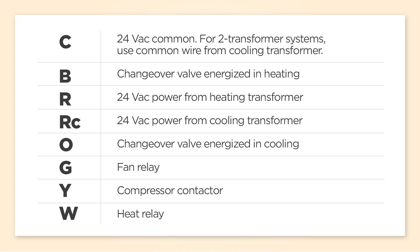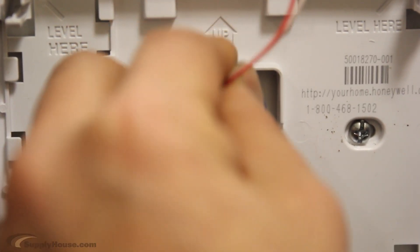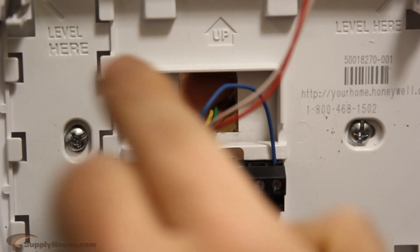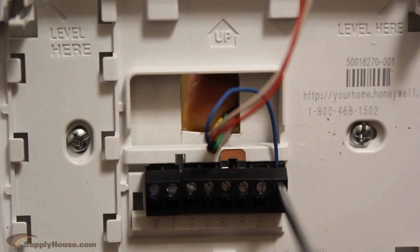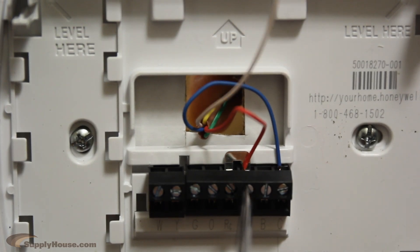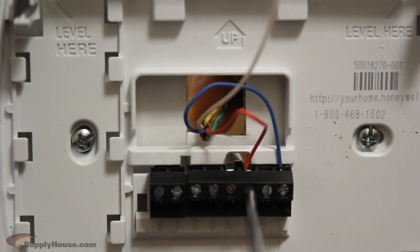With this installation, we used blue as a common. It is common throughout the system as it originates from the 24-volt transformer. The R is the 24-volt transformer's power. We wire that to the R of the STAT to provide control voltage. When used in conjunction with the C wire, it provides power for the STAT.